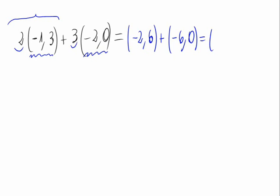And this equals, we add component by component because we have the addition of two elements of R2: -2 plus -6 is -8, 6 plus 0 is 6.